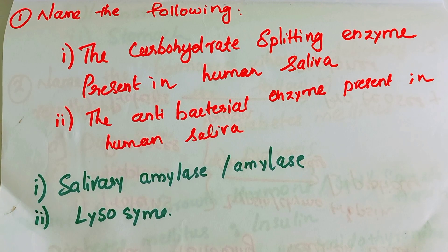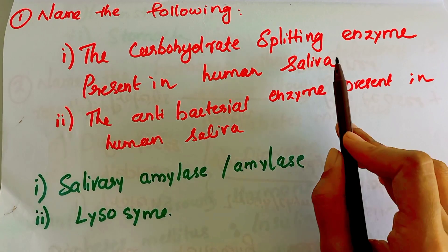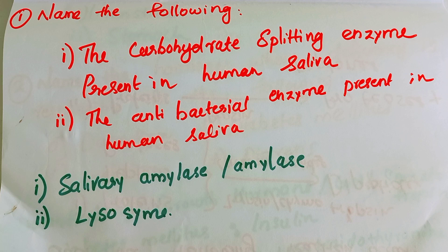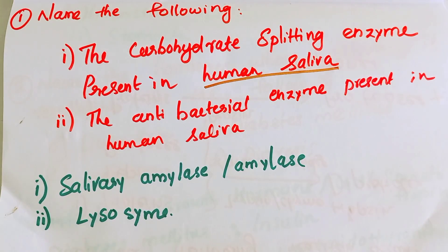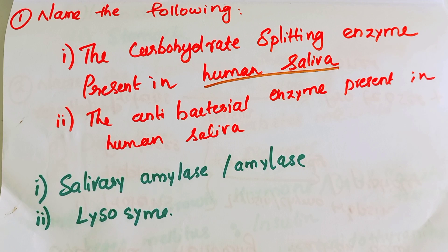First question: name the following. The carbohydrate-splitting enzyme present in human saliva. This enzyme is called Salivary Amylase, or simply Amylase. It is the carbohydrate-splitting enzyme found in human saliva.